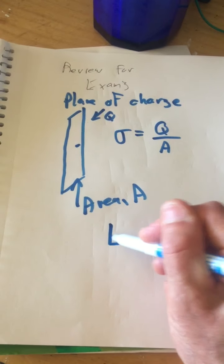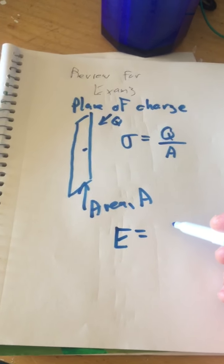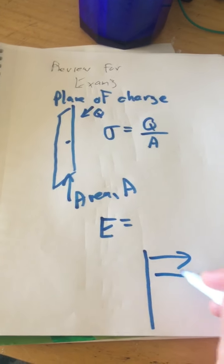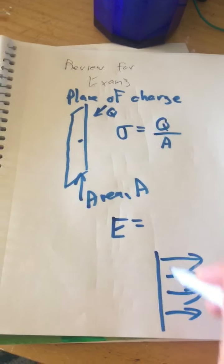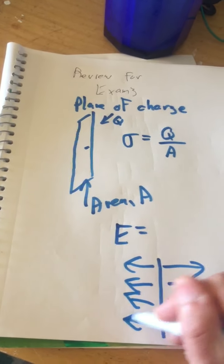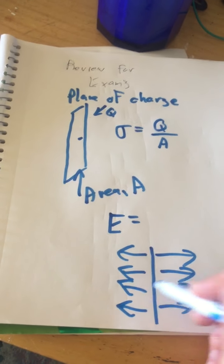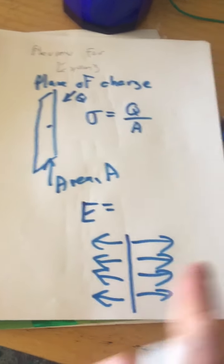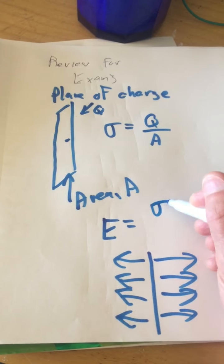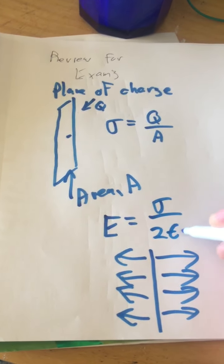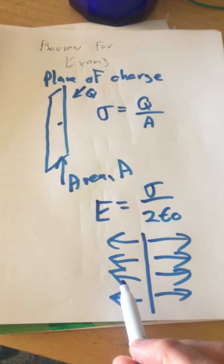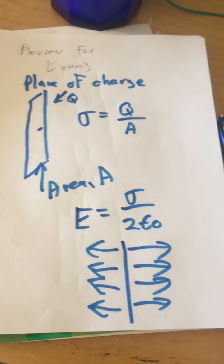The electric field associated with a plane of charge — if it's positive charge — is going to be directed away from the plane of charge, both sides, because there's going to be positive charge on either side of the plane, and the electric field is always directed away from the positive charge. The strength of the electric field associated with a single plane is sigma over two epsilon zero, and the direction to the right of the plane is î, and to the left is negative î.